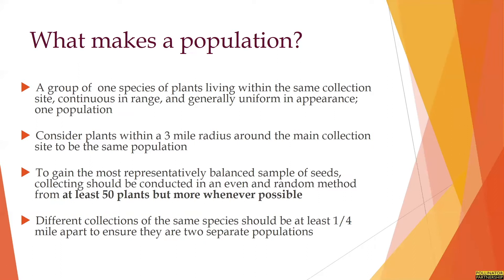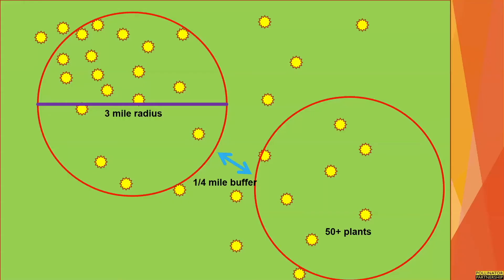It's important to gain the most representatively balanced sample of seeds. So we want to make sure that we're collecting from at least 50 plants, but in many cases we want to prioritize sites that have much more than 50 plants. Those plants should be collected from in an even and random method. Also, different collections of the same species should be at least a quarter mile apart to ensure that they are two separate populations.